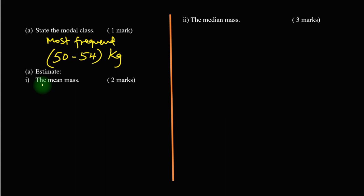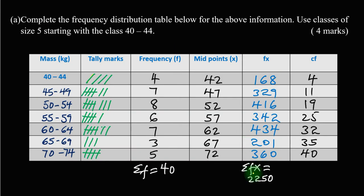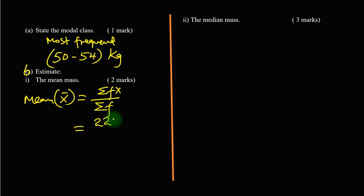Part B asks us to estimate the mean mass. Mean is given by sum of fx divided by sum of frequency. In our case, sum of fx is 2250, and we divide by sum of f, which is 40. Using a calculator, we get 56.25 kilograms.